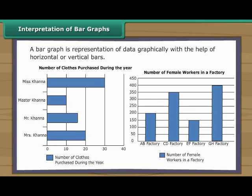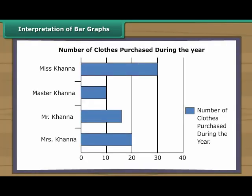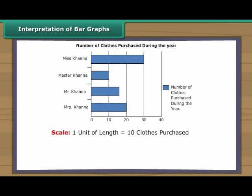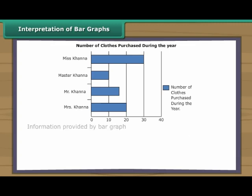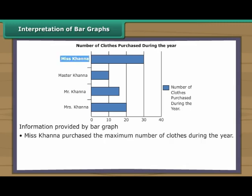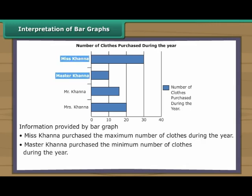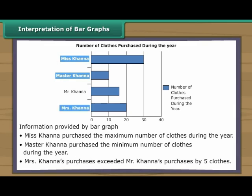Interpretation of bar graphs. A bar graph is a representation of data graphically with the help of horizontal or vertical bars. Bar graphs are easier to draw than pictographs. Look at this horizontal bar graph. The thickness of the bars and the gap between the bars are identical. It shows details of clothes purchased by the members of the Khanna family during the year. One unit of length represents 10 clothes purchased. Miss Khanna purchased the maximum number of clothes during the year. Master Khanna purchased the minimum number. Mrs. Khanna's purchases exceeded Mr. Khanna's purchases by five clothes.